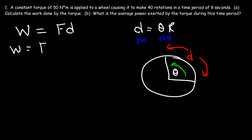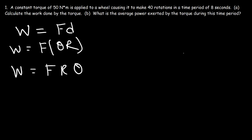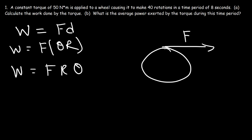We can replace the linear displacement d with theta times r, so work equals force times the radius times the angular displacement. If we apply a force F and R is the radius of the circle, the radius is basically the lever arm. Torque is force times the lever arm — the moment arm is the distance between the line of action of the force and the axis of rotation, which is basically the center of the wheel.